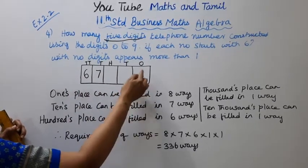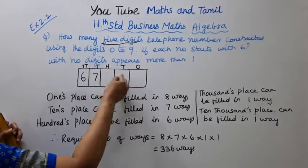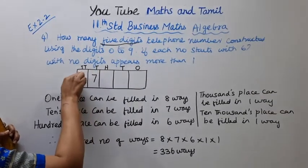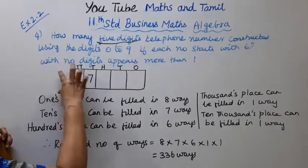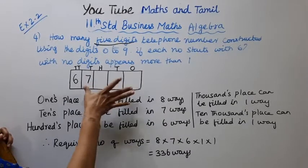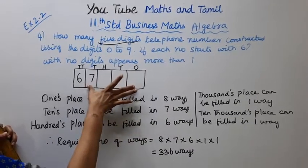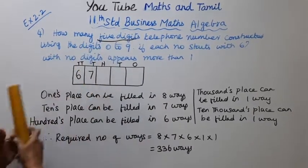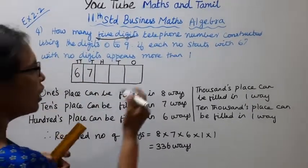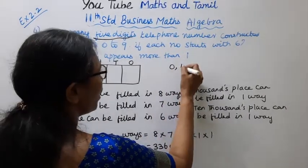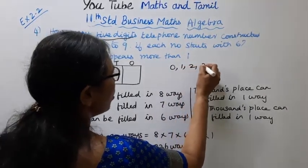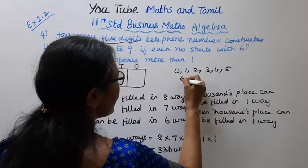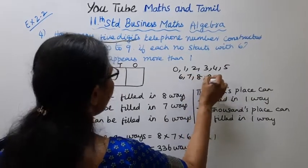We are using the digits 0, 1, 2, 3, 4, 5, 6, 7, 8, 9. Each number starts with 6, 7. So the first position is 6 and the second position is 7.